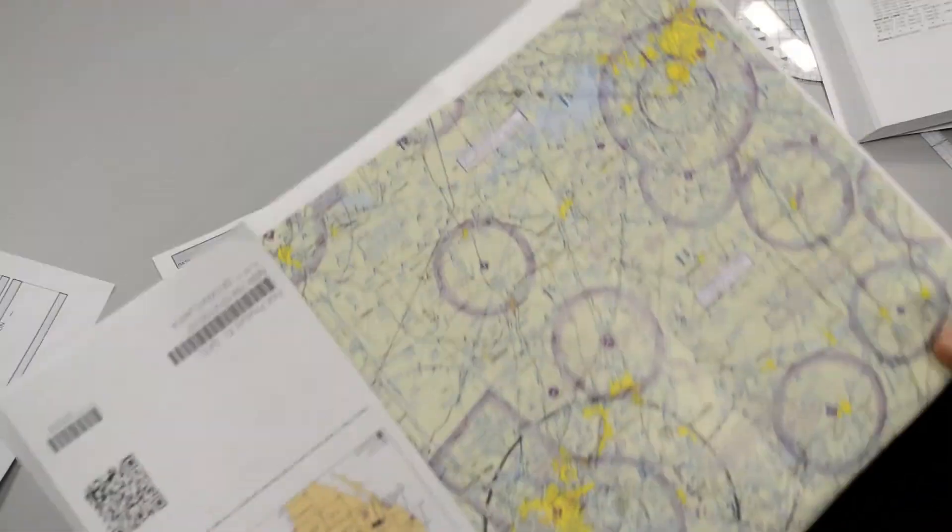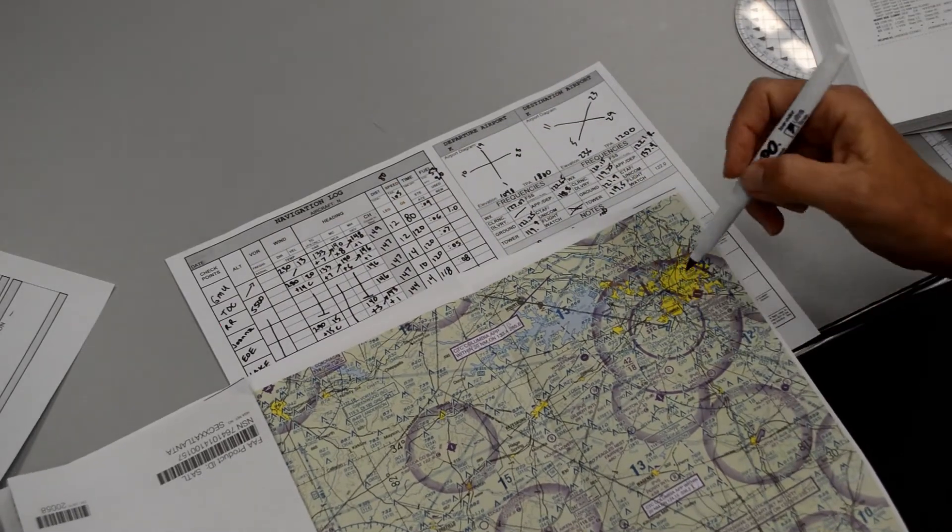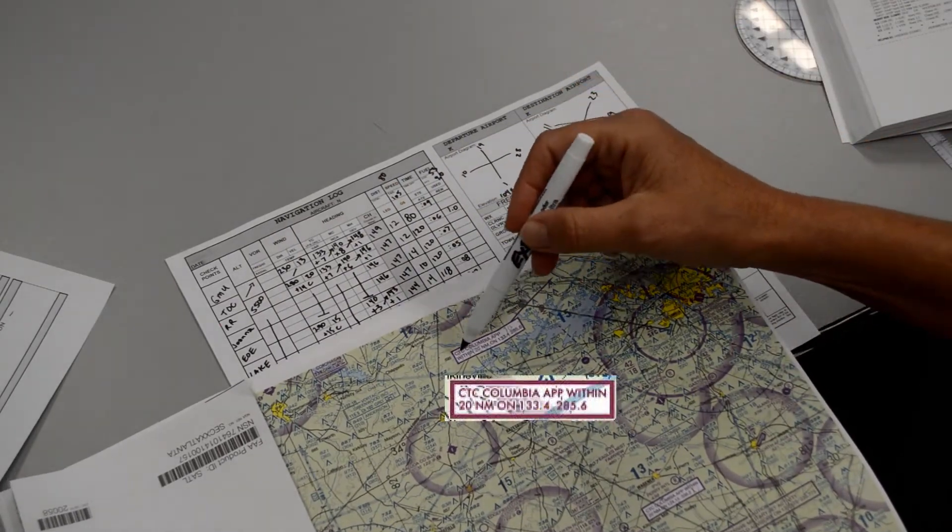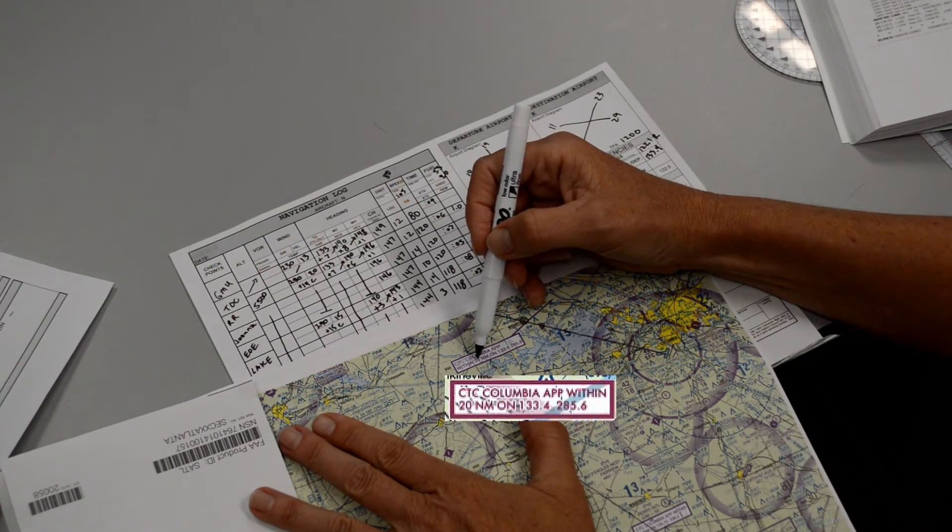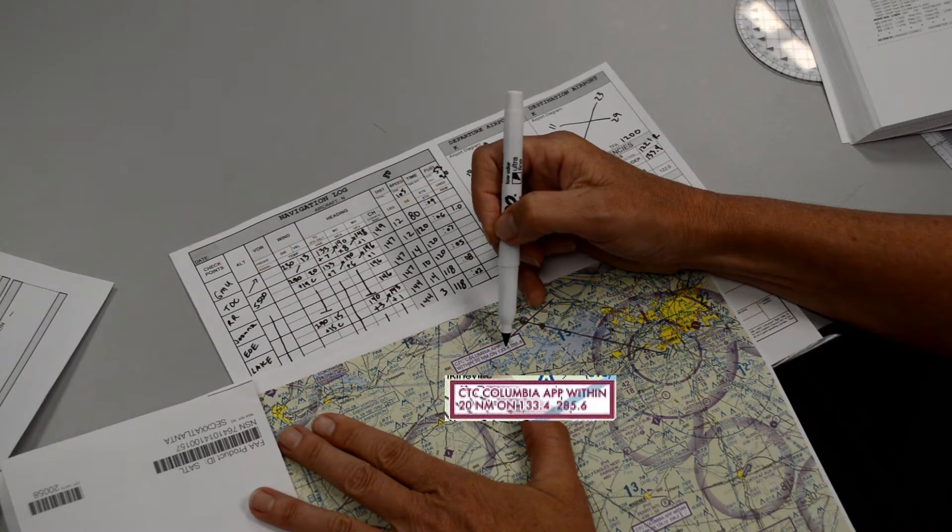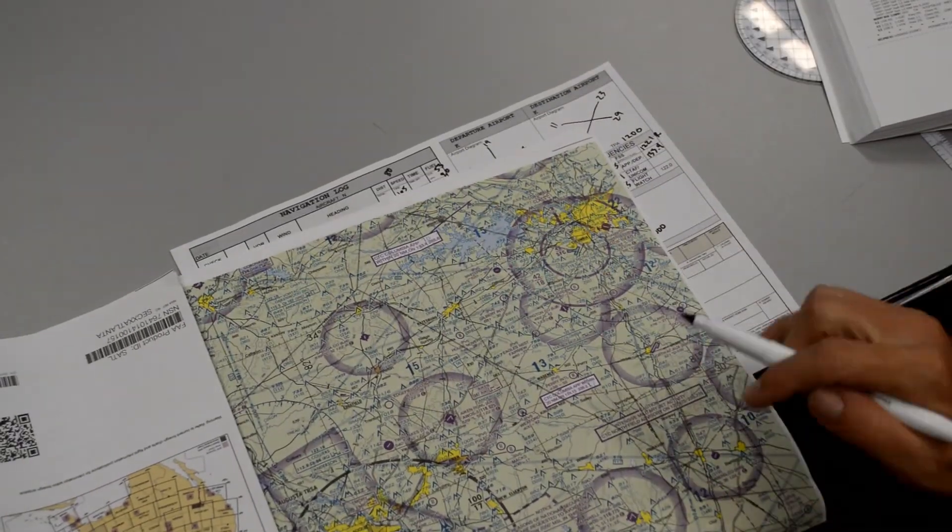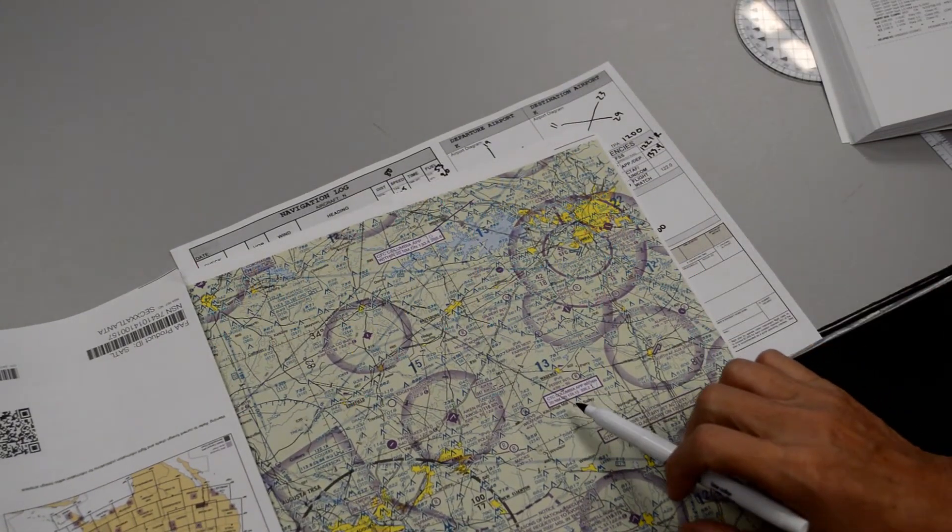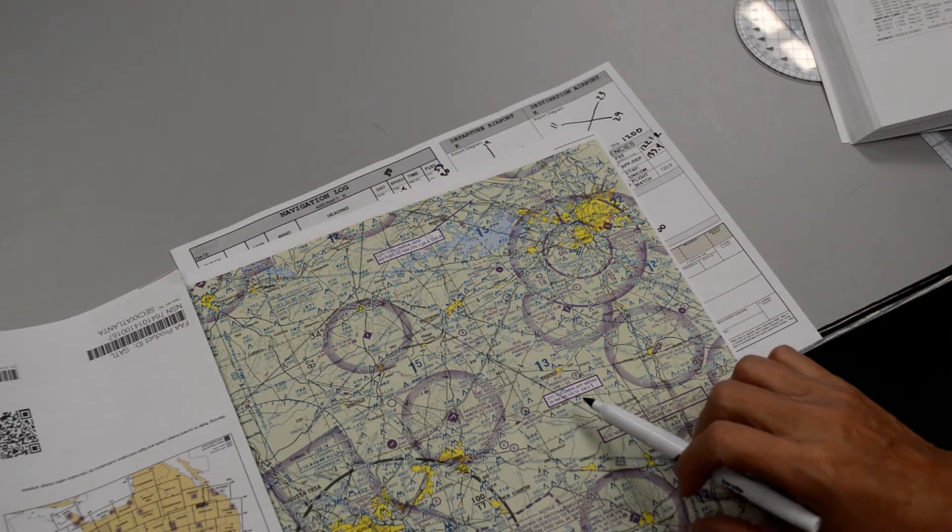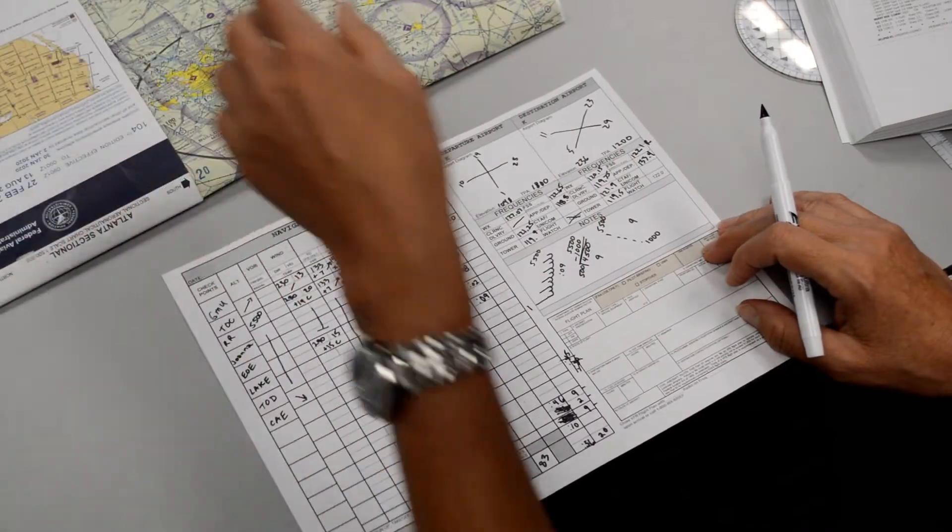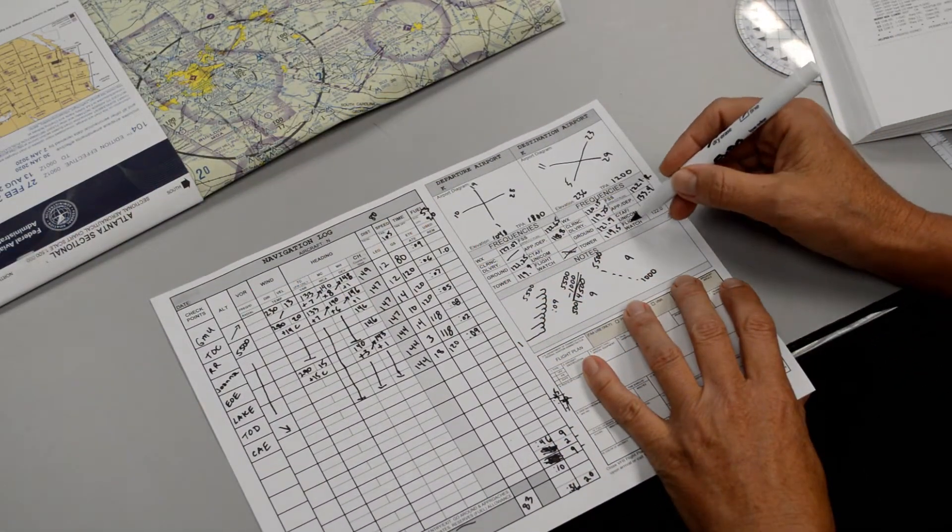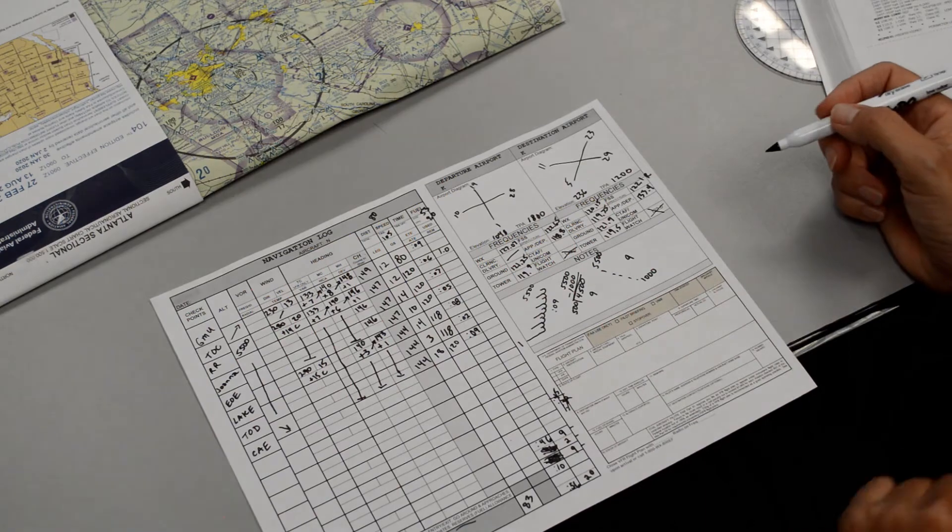Now also, on the sectional chart, for Class C airspaces, they put these white boxes on here, and it's telling us to please call them about 20 miles out. And this is the frequency you'll expect, which also shows us that it's frequency 133.4. So if we were coming in from the southern area, then it's reminding us to please contact them about 20 miles out, and then you would use the frequency 124.15. We don't really need the CTAF, and again, flight watch has been discontinued.